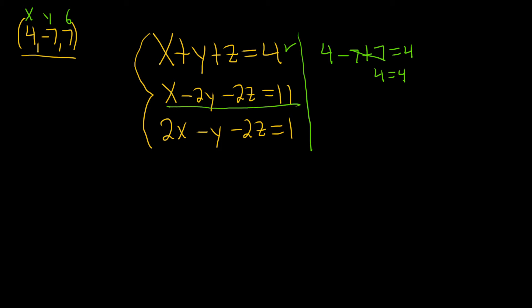Let's check this one. I'll do it down here. So 4 minus 2 times y, y is negative 7, minus 2 times z, which is 7, and this should be equal to 11. Again, we're checking this one. We have 4 minus 2 times negative 7, minus 2 times 7. So far, so good.